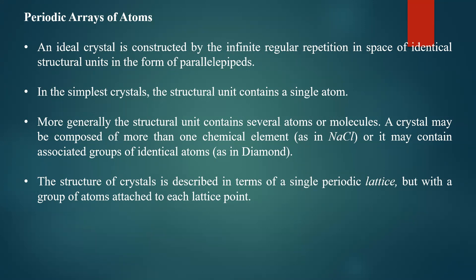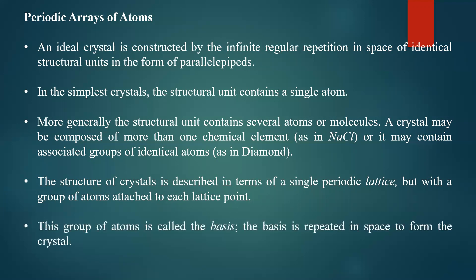The crystal lattice is an imaginary concept, whereas crystal structure is real. The lattice gives information about the arrangement of atoms. The group of atoms or single atom that forms the structural unit is called the basis. The basis is repeated in space to form the crystal. Three terms to understand properly: crystal lattice, basis, and crystal structure.